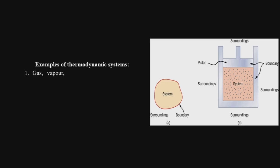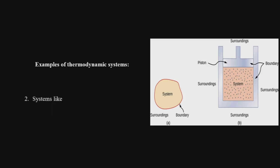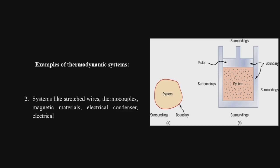Examples of thermodynamic systems include any gas in a container, vapors, steam, mixture of gasoline vapors and air, ammonia vapors and its liquid. Other examples include stretched wires, thermocouples, magnetic materials, and electrical condensers — all of these can be considered as systems.